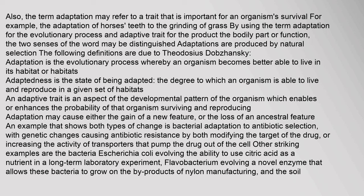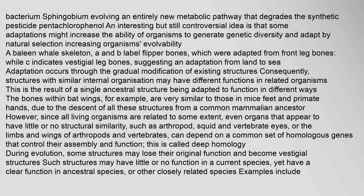Adaptation may cause either the gain of a new feature or the loss of an ancestral feature. An example that shows both types of change is bacterial adaptation to antibiotic selection, with genetic changes causing antibiotic resistance by modifying the target of the drug or increasing the activity of transporters that pump the drug out of the cell. Other striking examples are Escherichia coli evolving the ability to use citric acid as a nutrient in a long-term laboratory experiment, Flavobacterium evolving a novel enzyme allowing growth on by-products of nylon manufacturing, and the soil bacterium Sphingobium evolving an entirely new metabolic pathway that degrades the synthetic pesticide pentachlorophenol. Adaptation occurs through the gradual modification of existing structures.